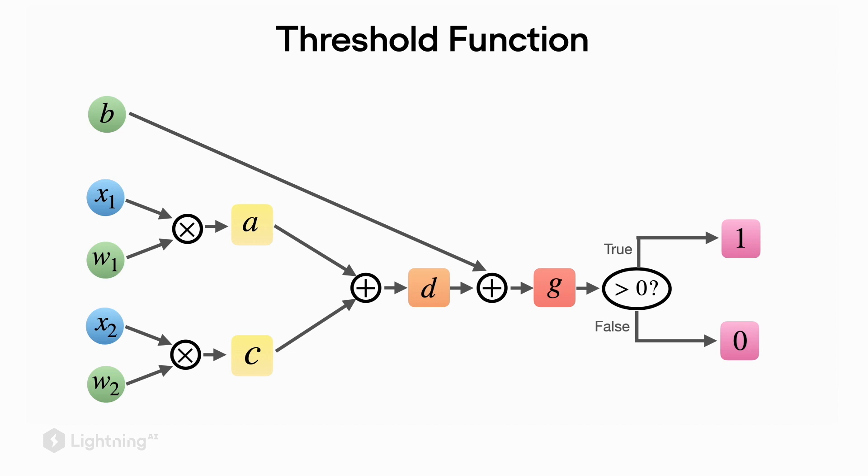This is the computation graph of a perceptron, where we broke down the perceptron computation into its individual elements. This part corresponds to the forward pass, the forward method we implemented in code in the previous videos.